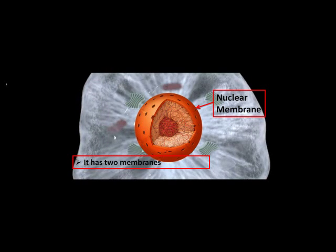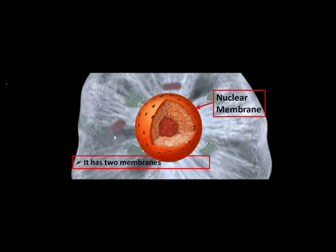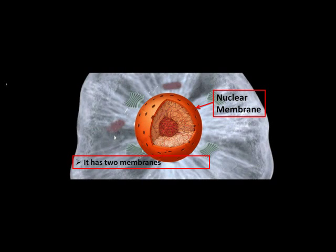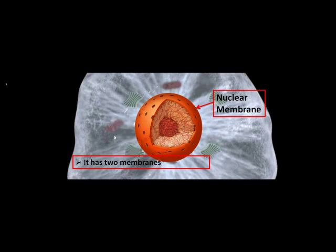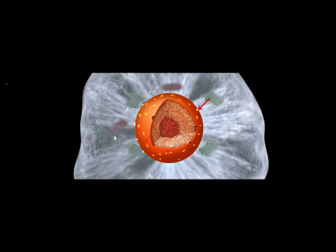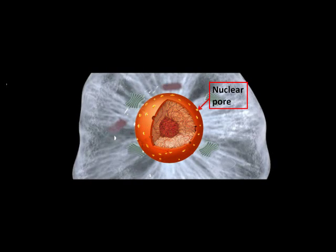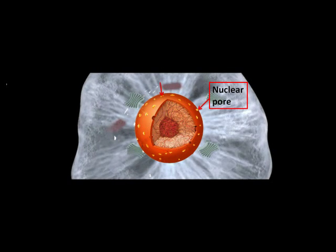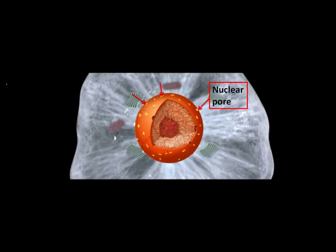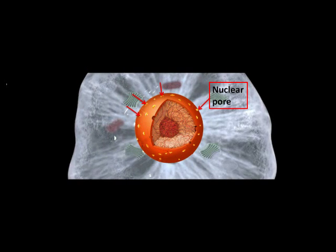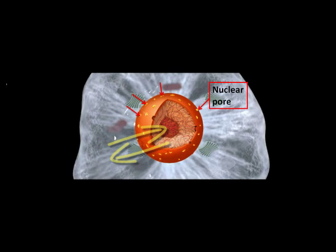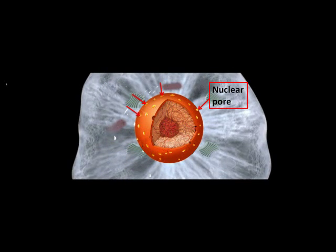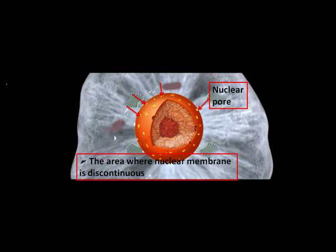We now move ahead to nuclear pores. Observe the change of color in these black dots. These yellow dots are nuclear pores. These nuclear pores allow exchange of materials between the nucleolus and cytoplasm.